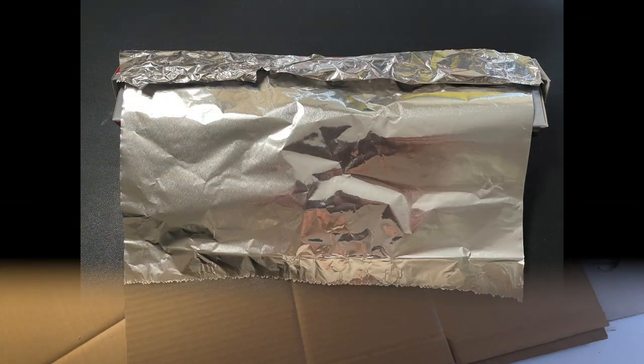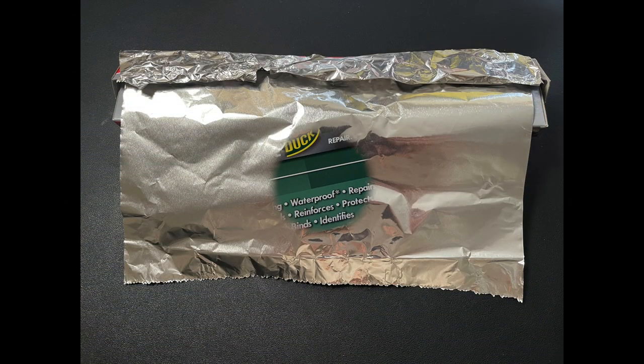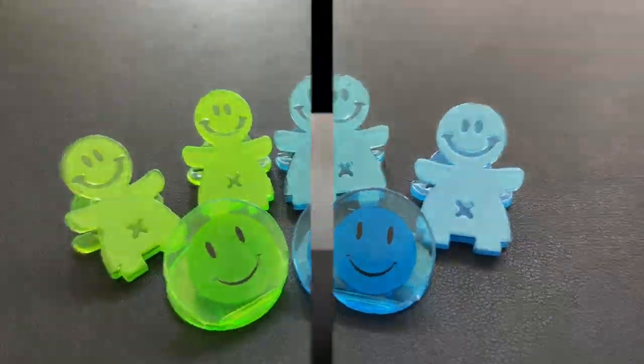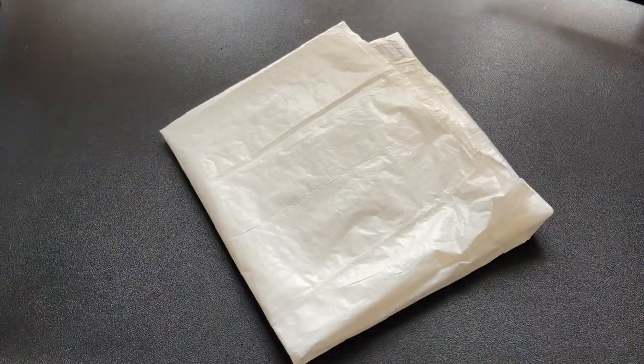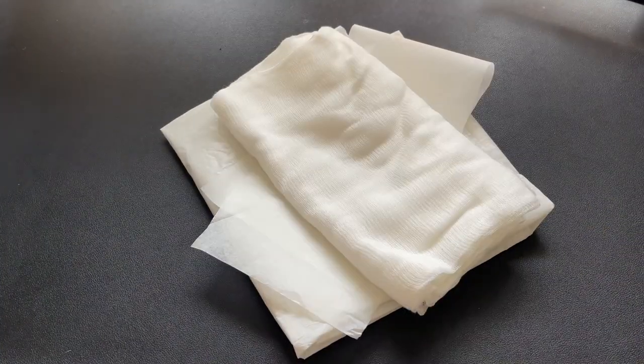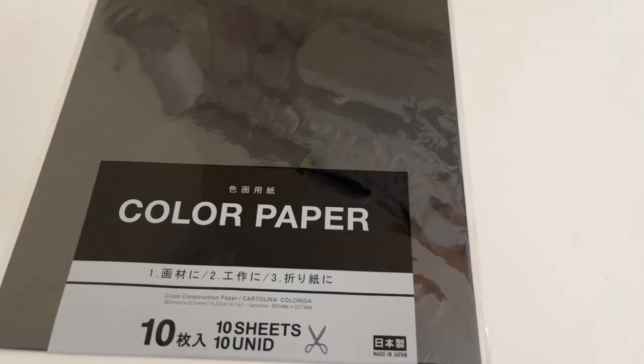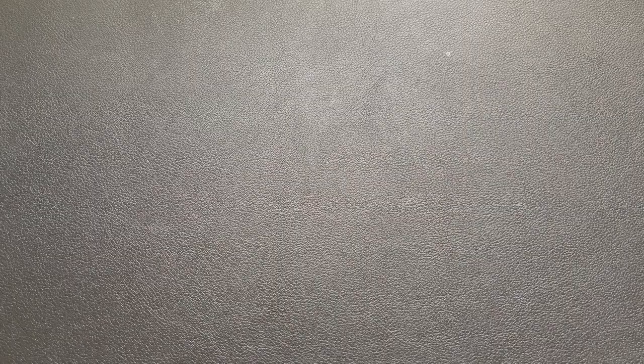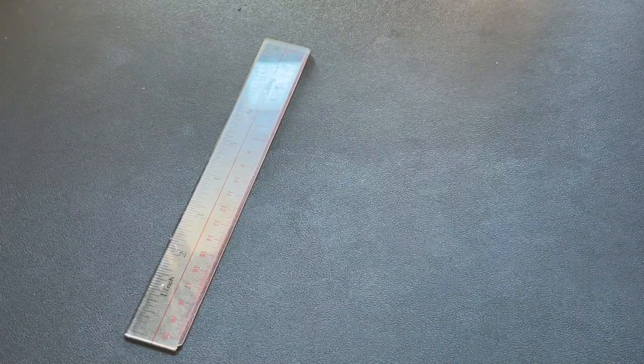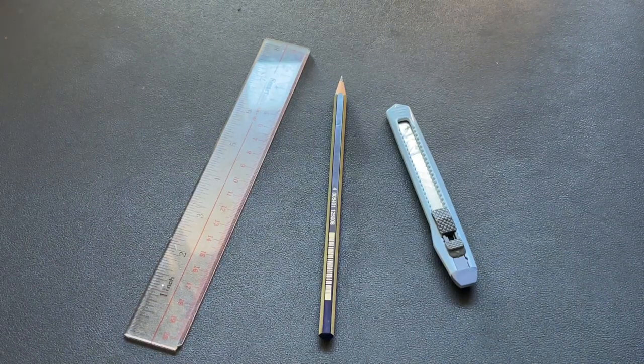Also you will need foil, duct tape, double-sided tape, a glue stick, some clips, a diffuser which is a bean bag but you can use parchment paper or cloth, and some black paper, but this is optional if you want your softbox to look more appealing on the outside. Now for the tools, you will need a ruler, a pencil, a craft knife, a pair of scissors, and a cutting mat. That's it.